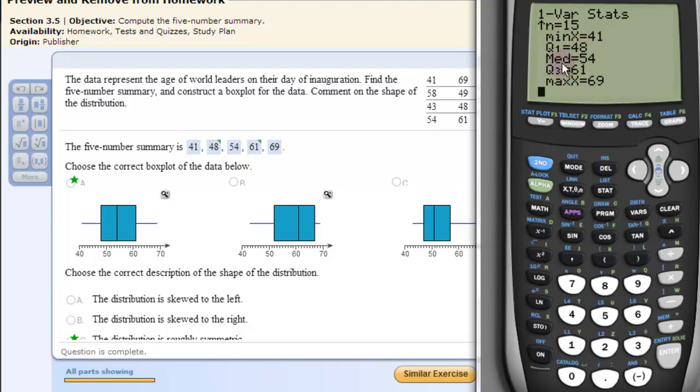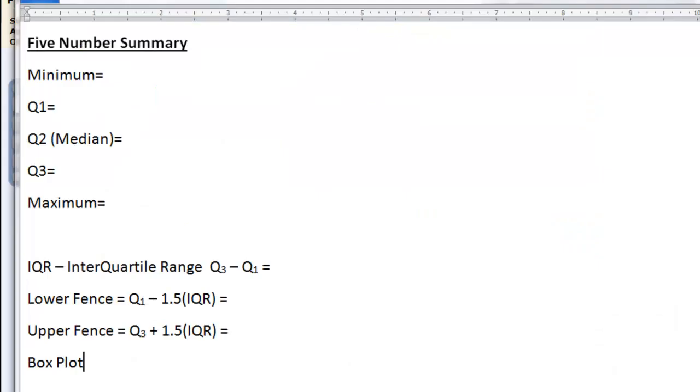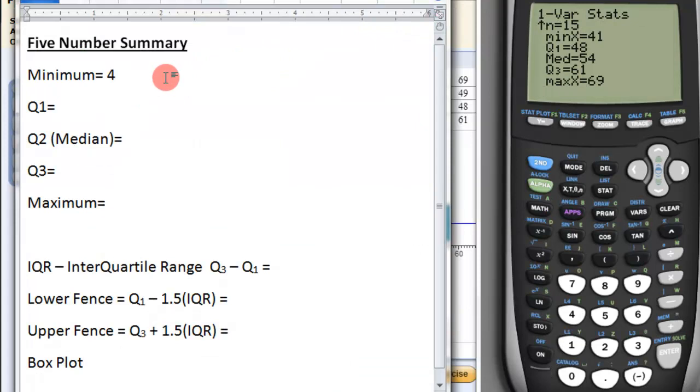So we have the minimum, quartile 1, quartile 2 median, quartile 3, and the maximum. So let's put that information into our document here. Minimum 41, 48, quartile 2 is 54, 61, maximum 69. Then the interquartile range is just the quartile 3, 61, minus the quartile 1, 48. So that's 13.